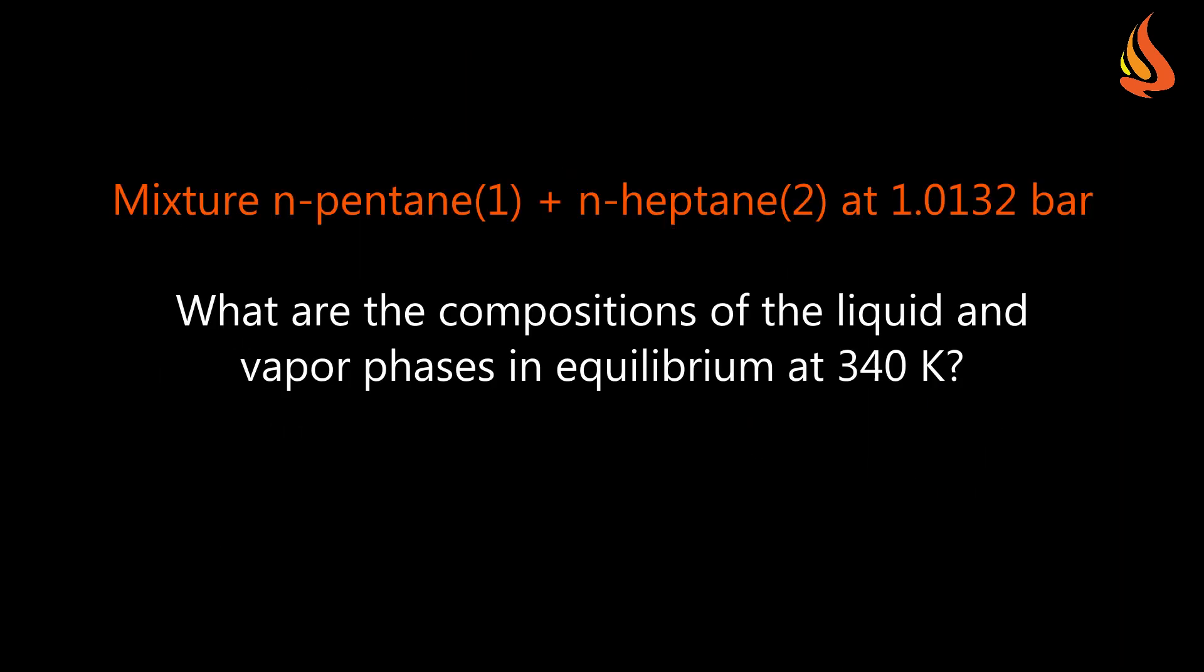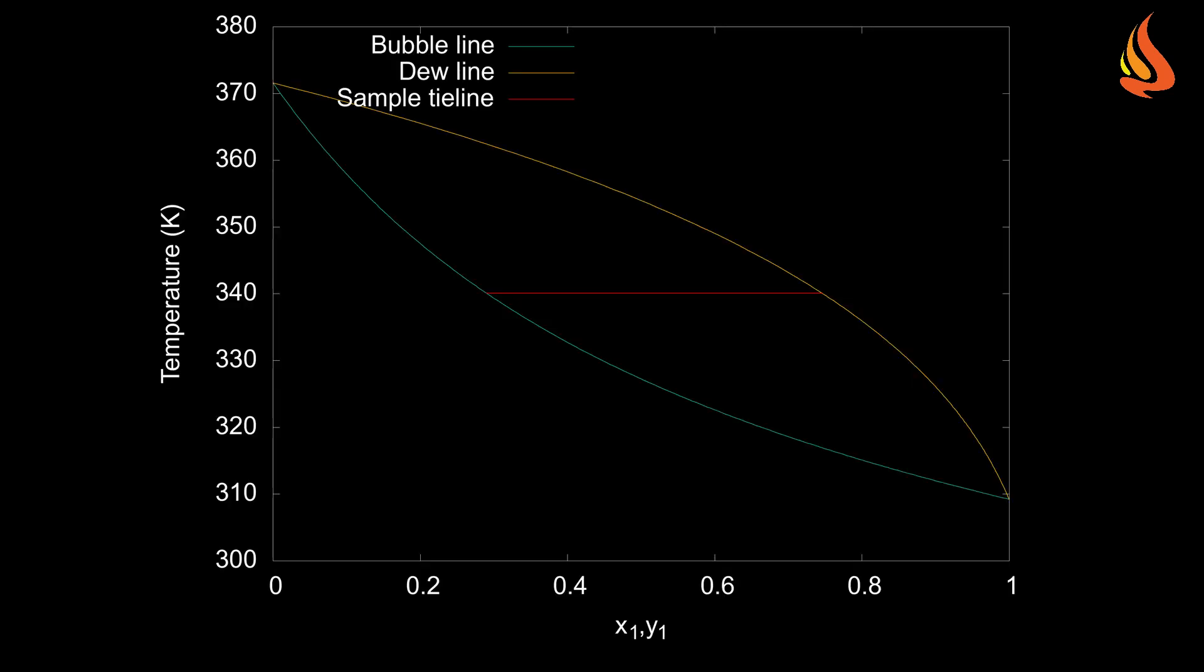Let's now tackle the problem of finding the compositions of the phases in equilibrium. We will do that for the mixture of n-pentane and n-heptane at atmospheric pressure at a temperature of 340 Kelvin. The red horizontal line that appears on this plot at the temperature of 340 Kelvin is called a tie line. A tie line connects the compositions of phases in equilibrium. The liquid phase composition is read from the bubble point line and the vapor phase composition is read from the dew point line. The mole fraction of component 1 in the liquid phase is equal to 0.29 and in the vapor phase it's equal to 0.75.